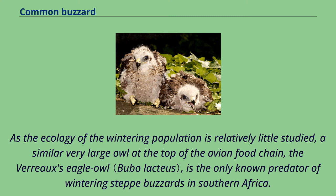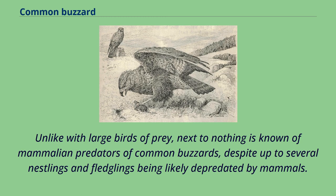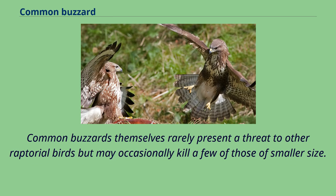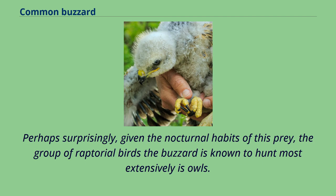Despite not being known predators of buzzards, other large bull-eating owls are known to displace or to be avoided by nesting buzzards, such as great grey owls and Ural owls. Next to nothing is known of mammalian predators of common buzzards, despite up to several nestlings and fledglings being likely depredated by mammals. Common buzzards themselves rarely present a threat to other raptorial birds but may occasionally kill a few of those of smaller size. The buzzard is a known predator of 237-gram Eurasian sparrowhawks, 184-gram common kestrel and 152-gram lesser kestrel. Perhaps surprisingly, given the nocturnal habits of this prey, the group of raptorial birds the buzzard is known to hunt most extensively is owls. Known owl prey has included 419-gram barn owls, 92-gram European scops owls, 475-gram tawny owls, 169-gram little owls, 138-gram boreal owls.